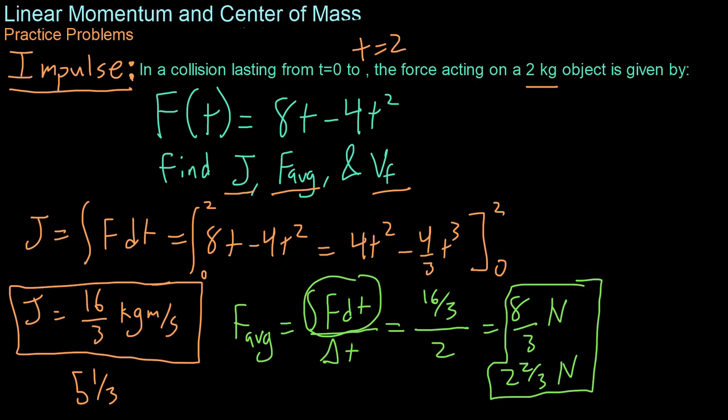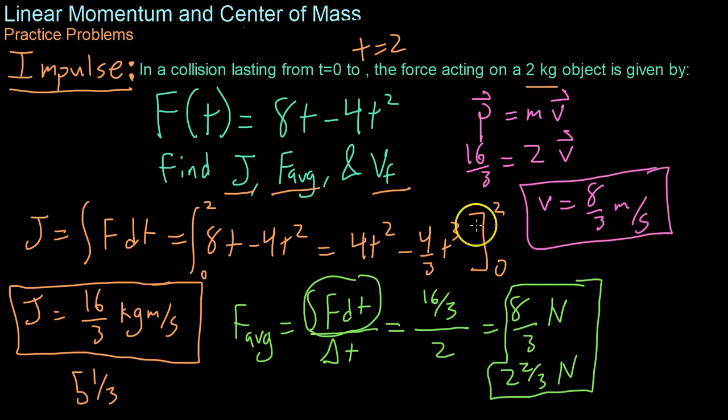And as the final part of this problem, we determine the final velocity. Well, we know that momentum by definition is just the mass times the velocity. And we know that the change in momentum goes from 0 to 16 thirds. So 16 thirds is our final momentum, and we have a 2 kilogram mass. And so the velocity is therefore 8 thirds meters per second in the direction of the force, so the positive direction.